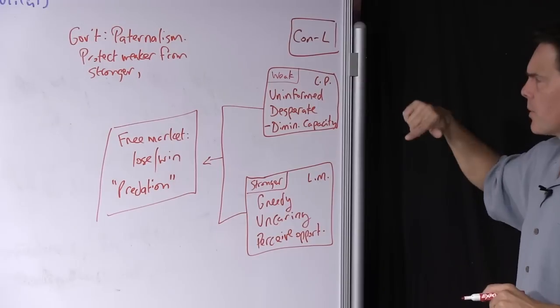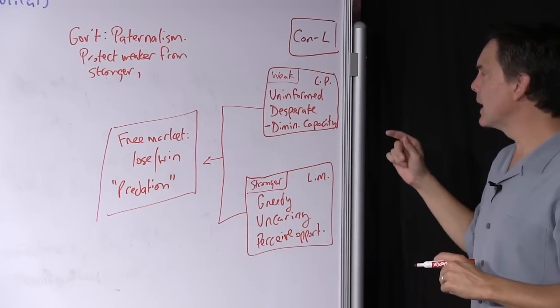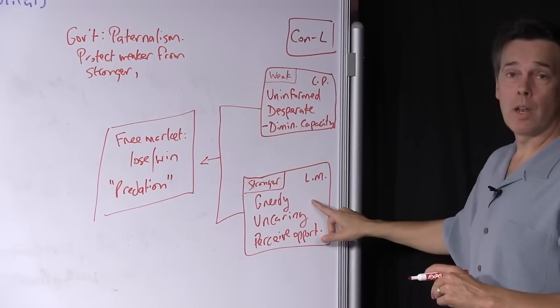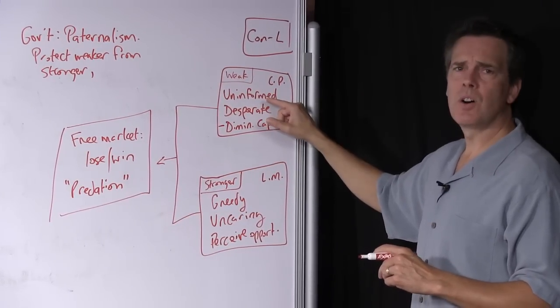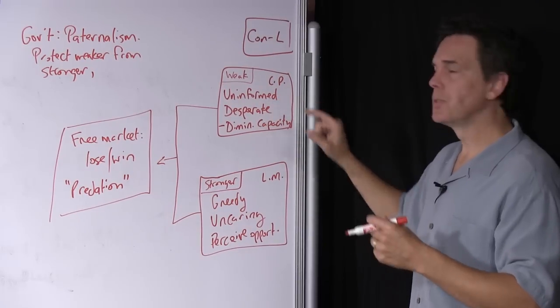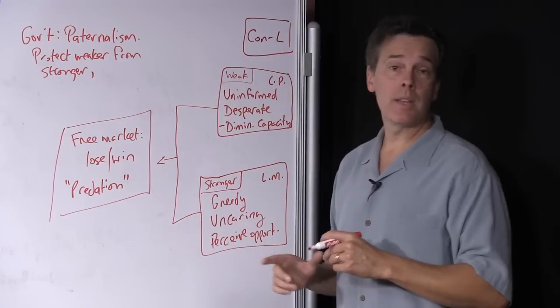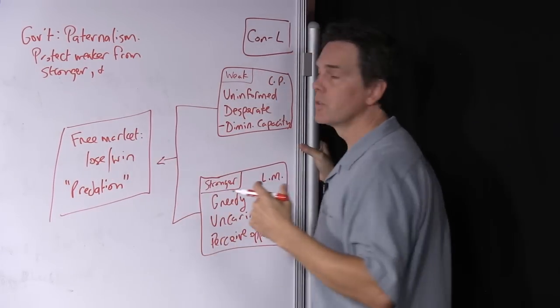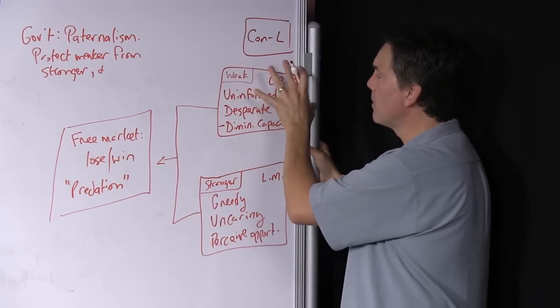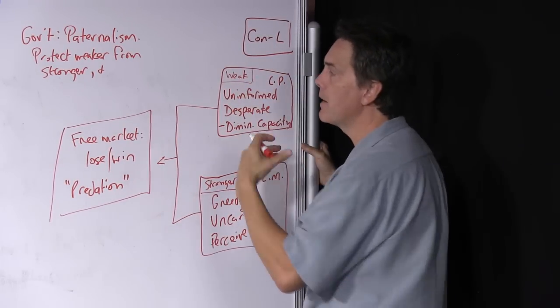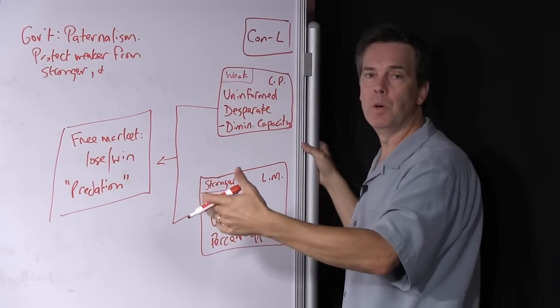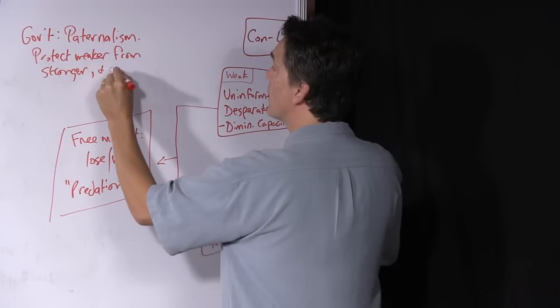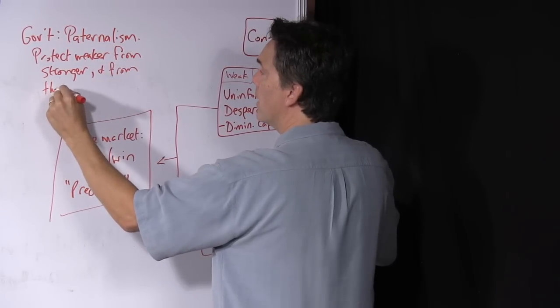There's another element of paternalism that's worth highlighting here that the cancer patients in a free market aren't objecting, right, to the laetrile manufacturer. In fact, they in many cases are insisting that they be able to purchase laetrile, but we the government don't think that that is a very good decision. And so another element of paternalism is to protect the weaker from themselves. These guys are making what we judge to be a bad medical decision on their behalf. And so on their behalf we will make a better decision for them, or at least stop them from making a bad decision. And so we need to add and from themselves.